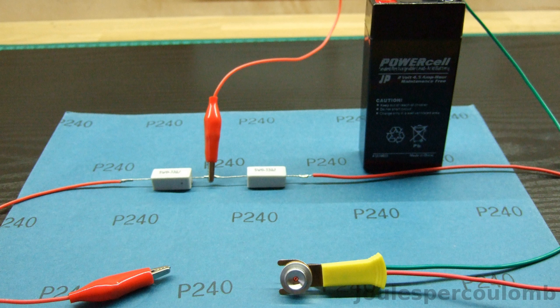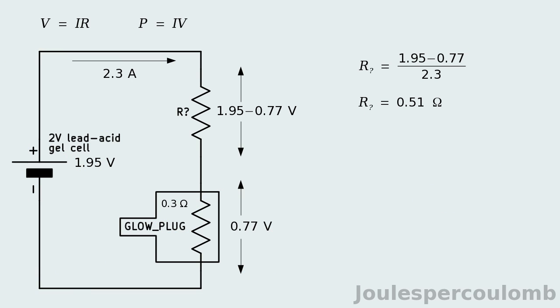The voltage directly across the cell's terminals was found to be 1.95 volts. Using all the measured values to calculate the series resistance, that we already know should have been 0.3 ohms, gives the result 0.51 ohms.